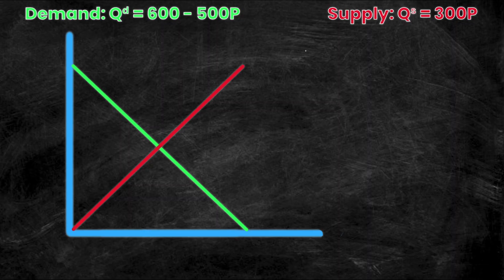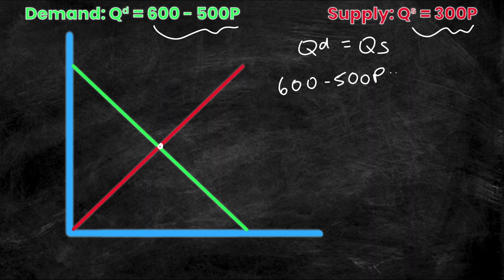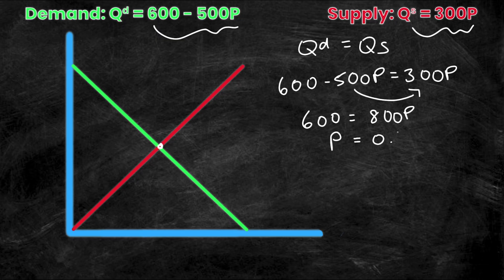So we know at the equilibrium point of the supply and the demand curve, which is located right here, we know that quantity demanded is equal to quantity supplied. And so we have these two equations right here and we're going to let them equal one another. So then we have 600 minus 500P is equal to 300P. I'm going to rearrange this equation, I'm going to put the 500 on the other side, which gives me 600 is equal to 800P. Therefore, P must be equal to 0.75.